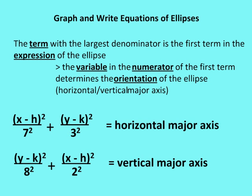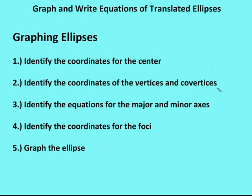So let's talk about graphing ellipses. There are five steps. Step one: identify the coordinates for the center. Step two: identify the coordinates of the vertices and co-vertices. Step three: identify the equations for the major and minor axes. Step four: identify the coordinates for the foci. Step five: graph the ellipse.